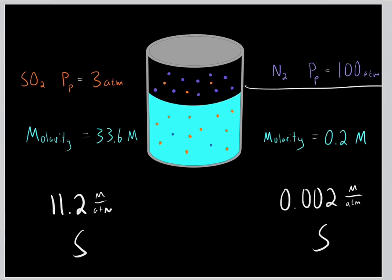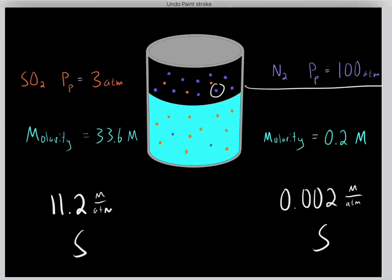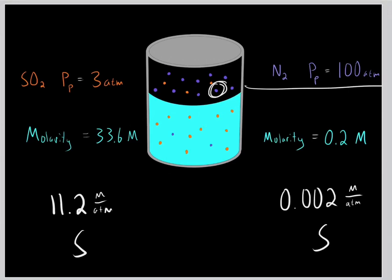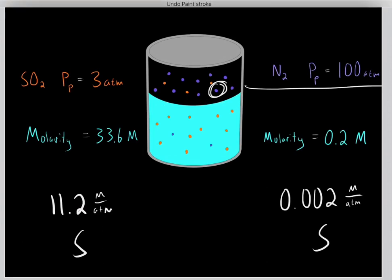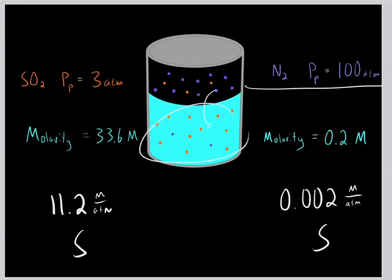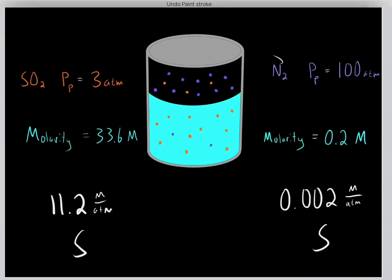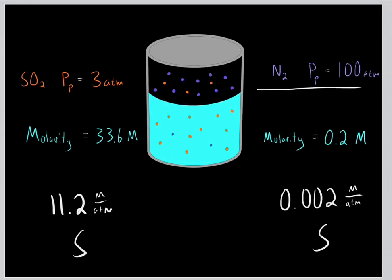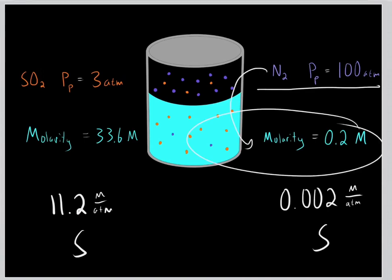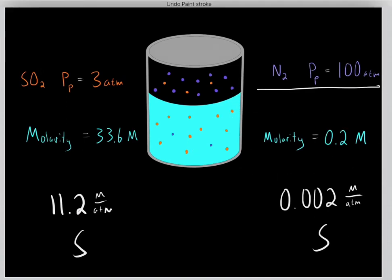Nitrogen gas is very nonpolar, so it does not like to be in a polar water solution. This is reflected in the solubility constant — nitrogen has a very low solubility constant, telling us it does not like to dissolve in water. That is why we can have such a large partial pressure of nitrogen yet such a small molarity and small amount of nitrogen dissolving in the water solution.